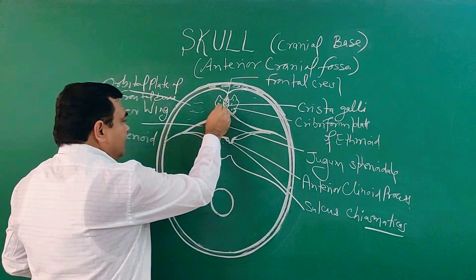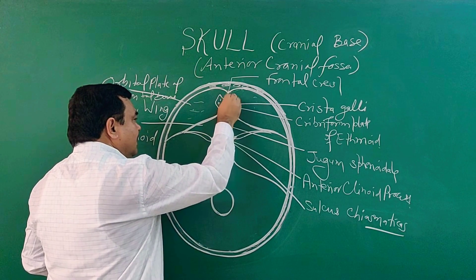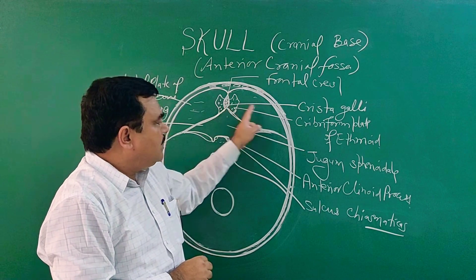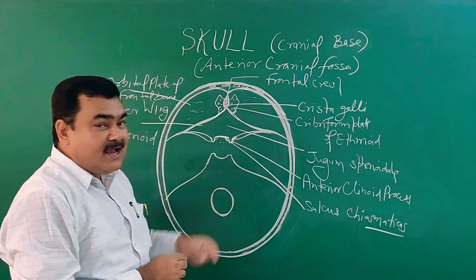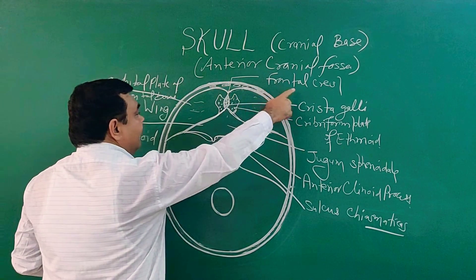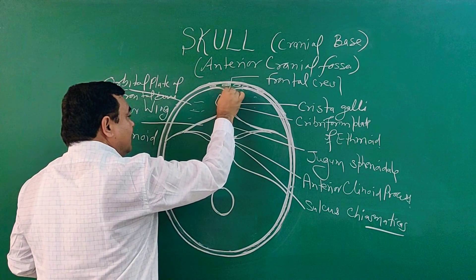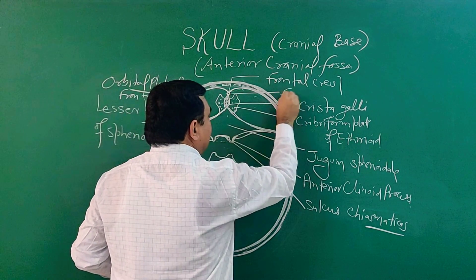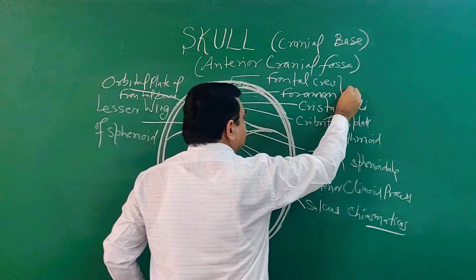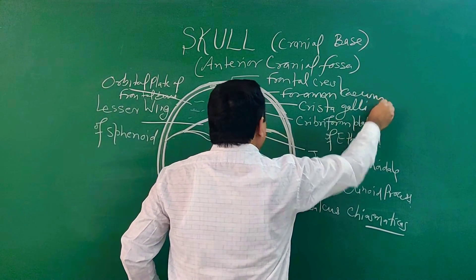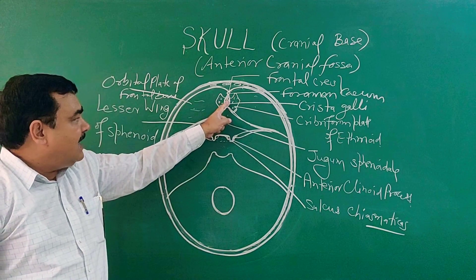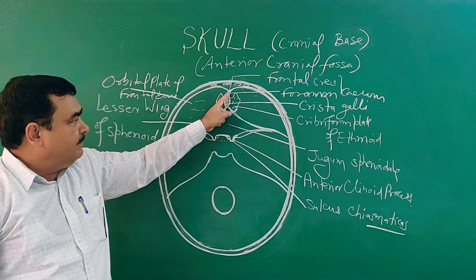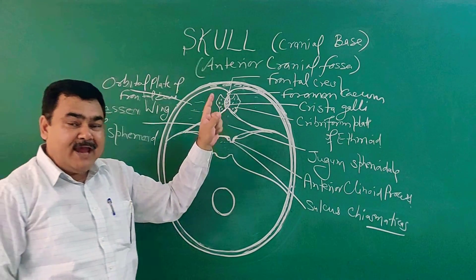There is a bone projection here known as the crista galli. Between the crista galli and the frontal crest is the foramen cecum. On each side of this is the cribriform plate of ethmoid with its numerous foramina.